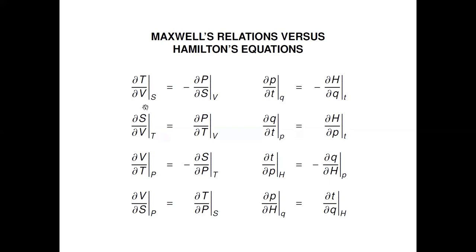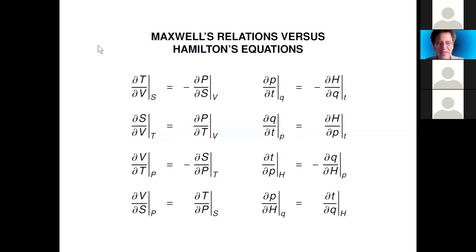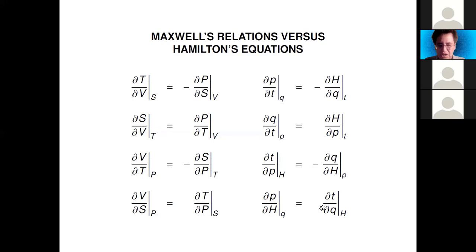The nice thing about an analogy like this is that anything you can do on one side you can try to do on the other. For example, there are actually four Hamilton's equations corresponding to the four Maxwell relations — the extra two involve how time changes as a function of momentum or position, which looks weird. People seem well aware of the analogous equations on the thermodynamics side but rarely discuss them in classical mechanics. I'm busy studying this and will share more as I work it out. Thanks.